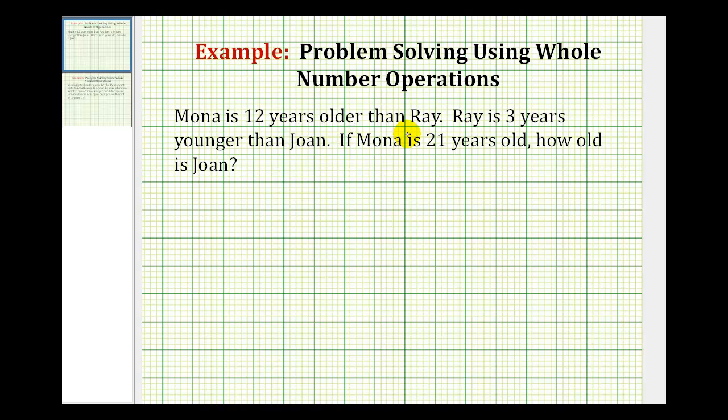Mona is twelve years older than Ray. Ray is three years younger than Joan. If Mona is twenty-one years old, how old is Joan?